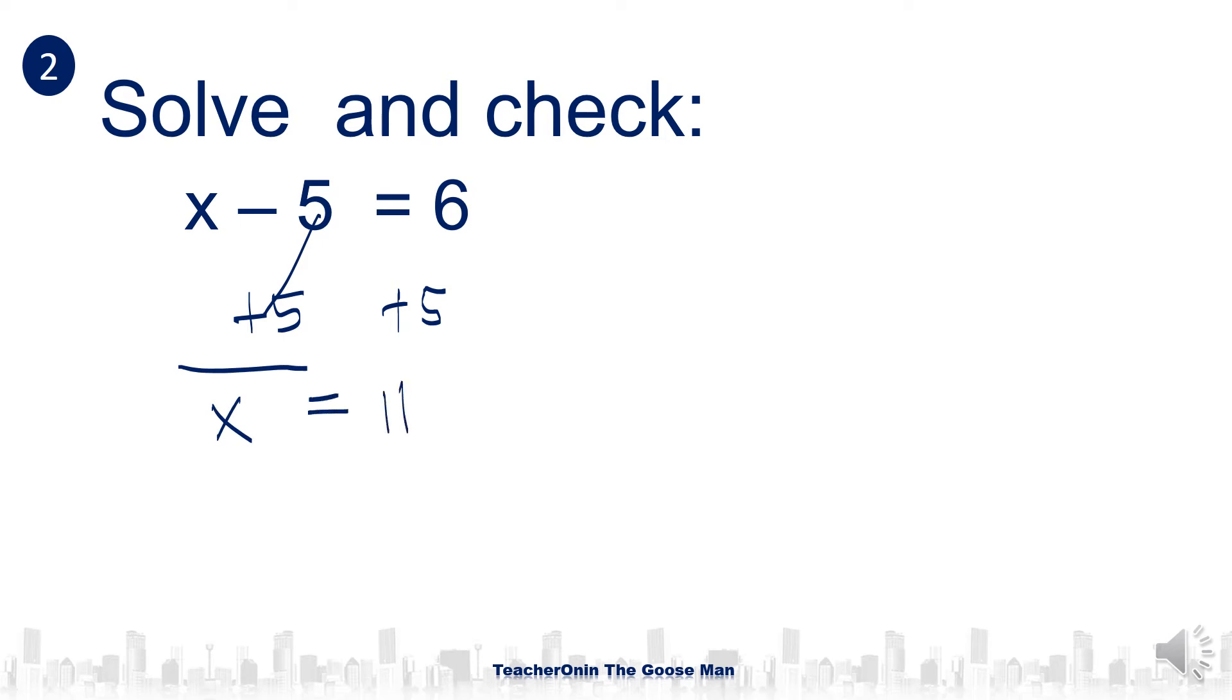Again, to double check our answer, I have here x minus 5 equals 6. Substituting 11, will it make it to 6? 11 minus 5 equals 6. Therefore, our answer of x equals 11 is correct.